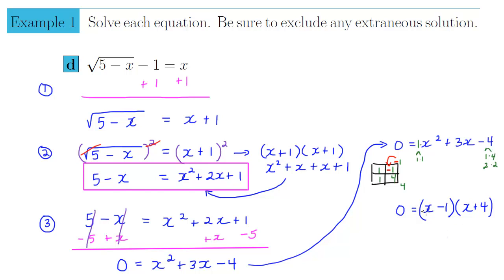And then the 0 product principle tells me if I have a product equal to 0, I can set each factor to 0. So I get either 0 equals x minus 1, or 0 equals x plus 4. Which gives me my two solutions, two possible solutions, x equals 1 when I isolate in the first equation, or x equals negative 4 when I isolate in the second equation.